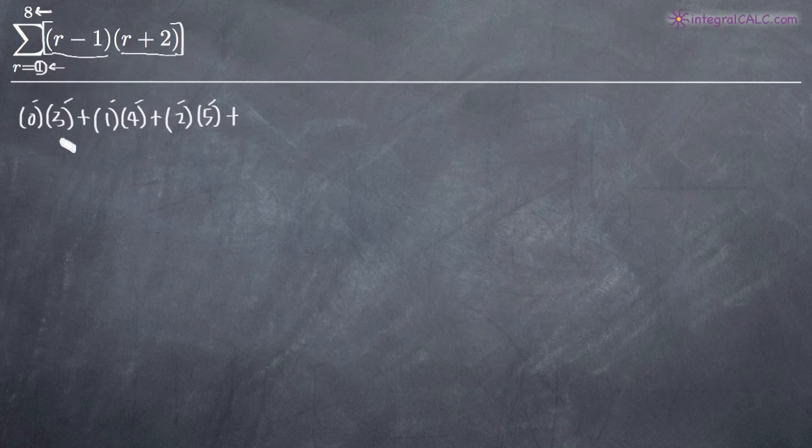So we start seeing that pattern and we can just continue writing that pattern. We're getting zero, one, two, so that means this one's going to be three. We've got three, four, five, which means this one's going to be six.